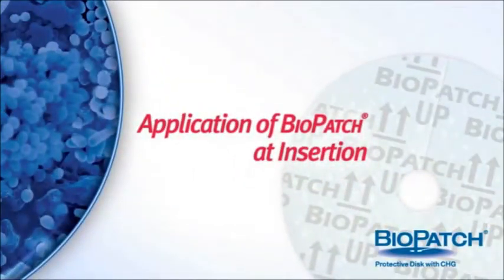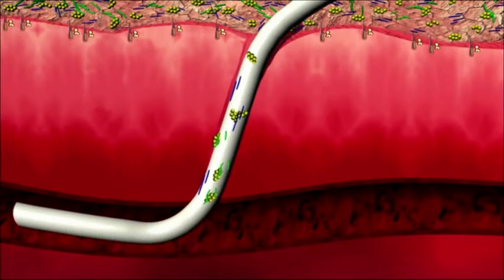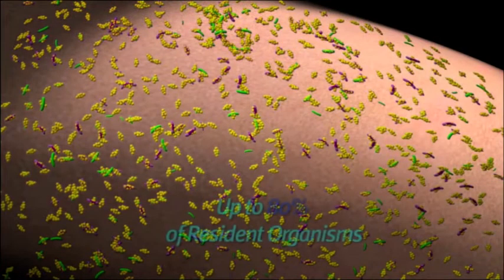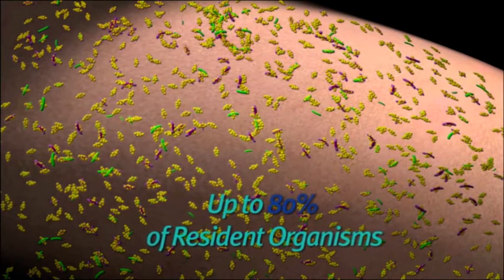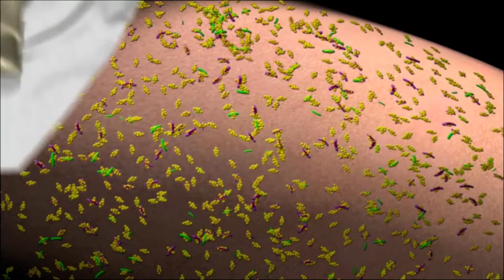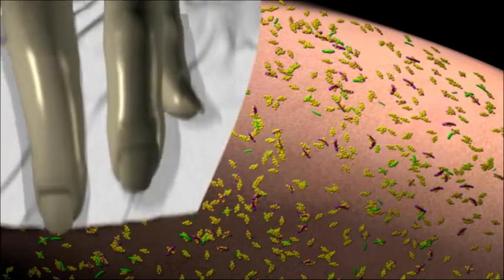Application of a bio patch: Some bacteria will invariably attach to the catheter surface as it passes through the skin layers, hair follicles, and sebaceous glands. All surface transient and resident organisms, and up to 80% of the resident organisms in the stratum corneum, can be removed by properly preparing the skin before insertion.